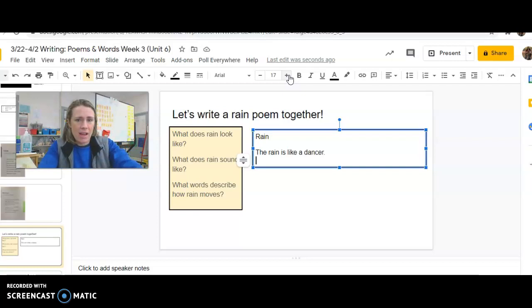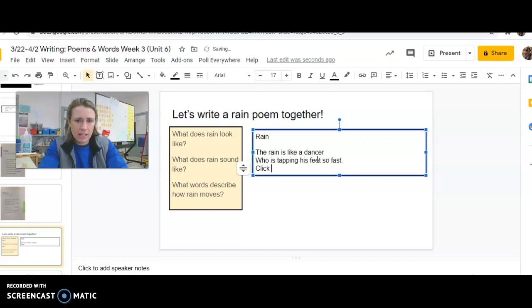Let's come up with some more ideas. So now we have to kind of say why the rain is like a dancer. So I'm picturing that the rain is like a dancer, because sometimes a dancer taps her feet fast, or sometimes a dancer is like gliding through the sky. So I'm going to say both. The rain is like a dancer, who is tapping his feet so fast. Click, clack, click, clack.